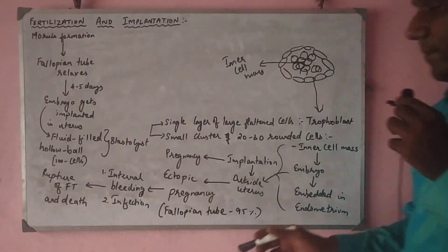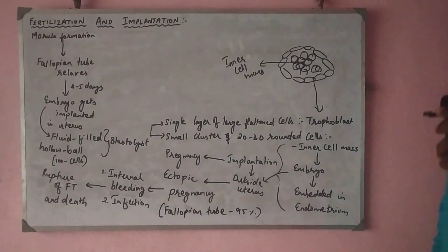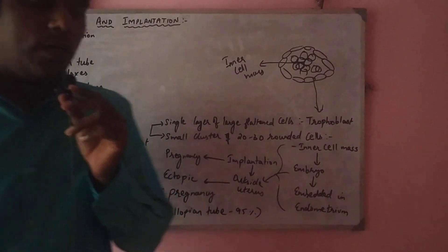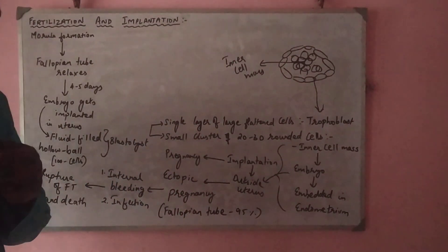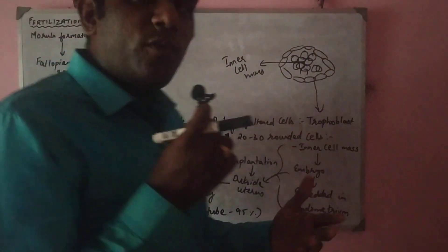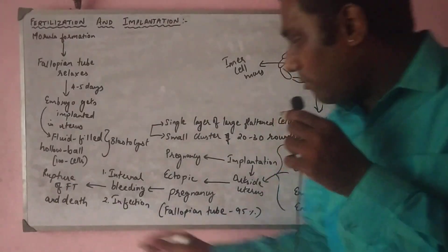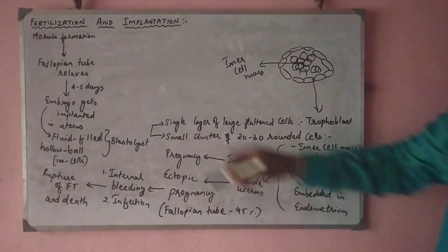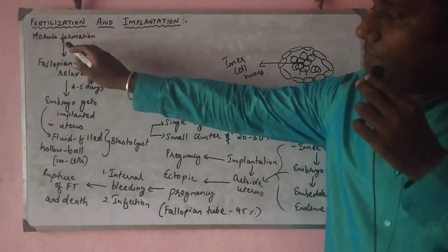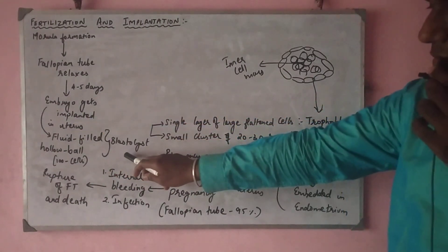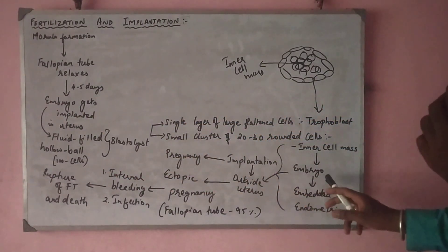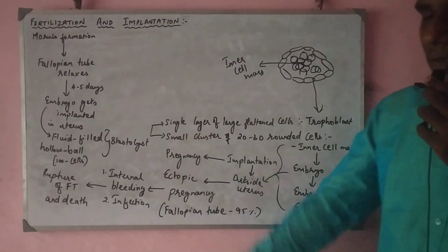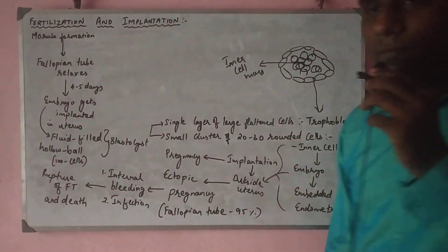Ectopic pregnancy is actually a dangerous condition and many people lose their viability to produce offspring when they have this kind of ectopic pregnancy. With this we come to the end of implantation. To summarize: morula formation is followed by the formation of a blastocyst, and the inner cell mass of that blastocyst finally develops into an embryo, which gets embedded in the endometrial layer of the uterus.